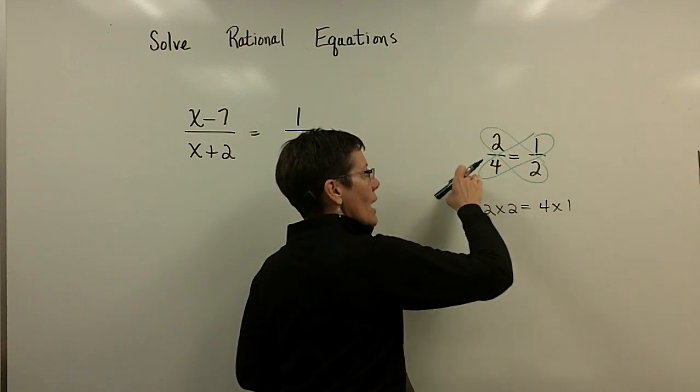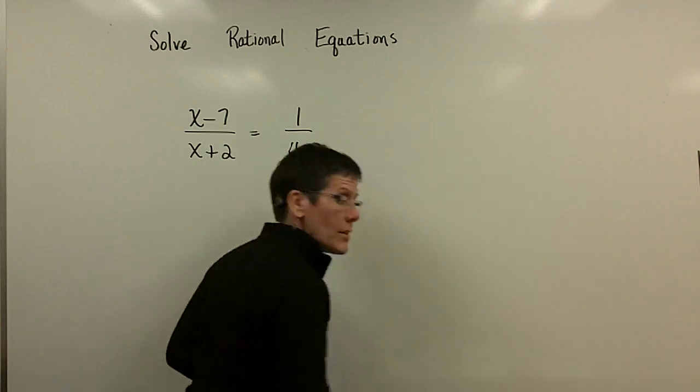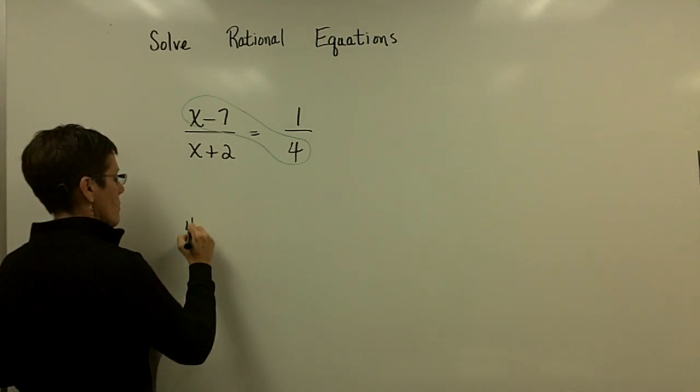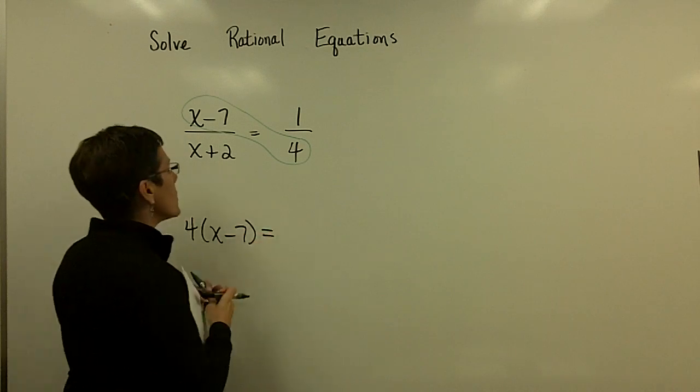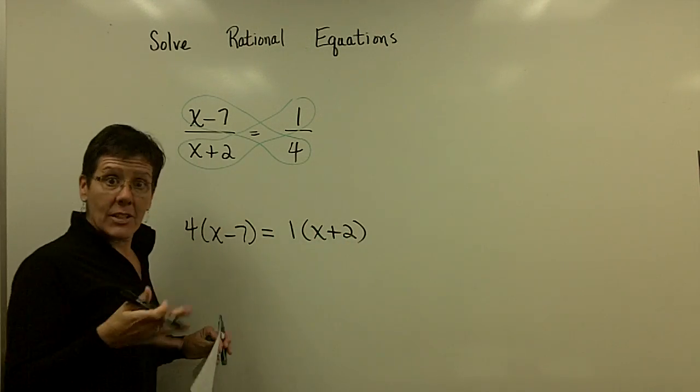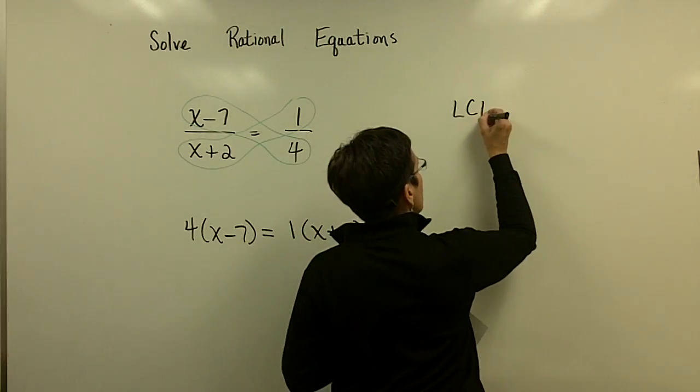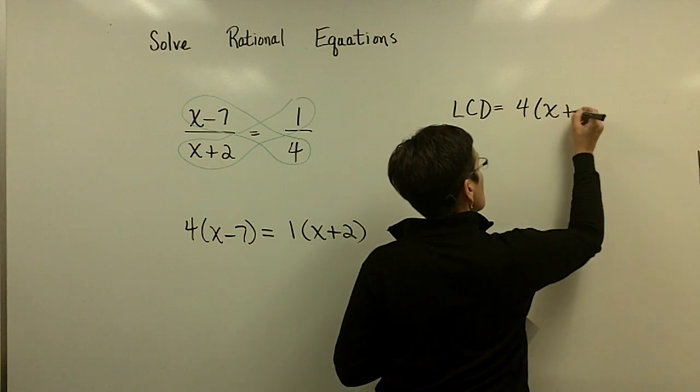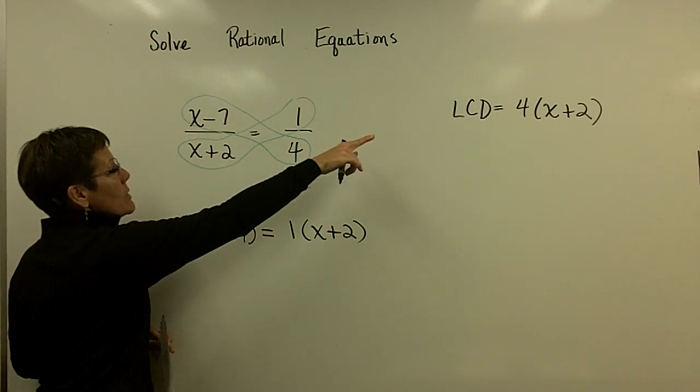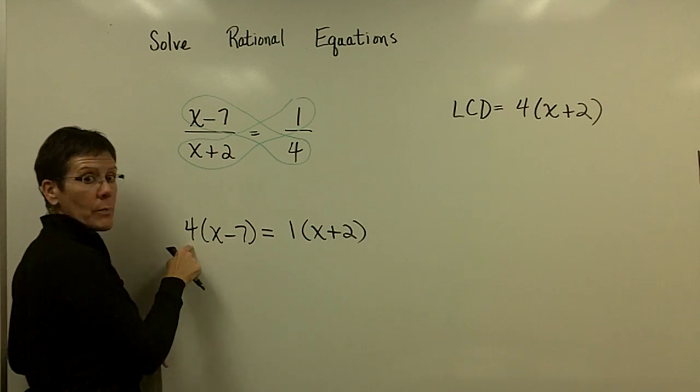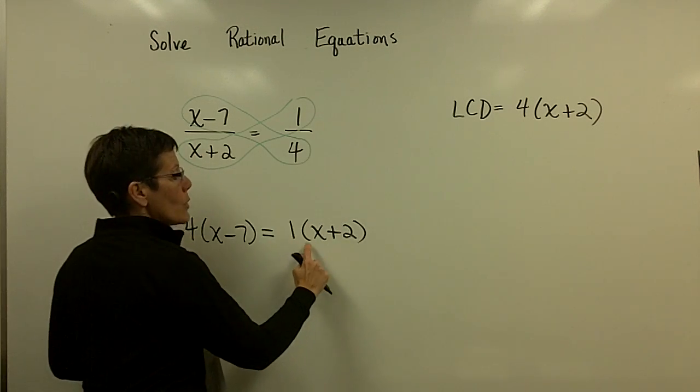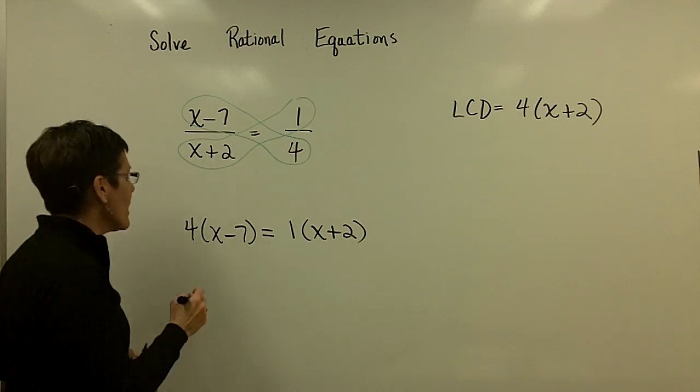2 times 2 has to be equal to 4 times 1. And it is. The problem we've got on the board here is a proportion. So, we could set their cross products equal and eliminate the denominators. So, I could just take this 4 times the (x-7) and set it equal to this 1 times this (x+2). Had you not noticed, the LCD for this problem was 4(x+2). So, this fraction here had the (x+2). It was missing the 4. So, the numerator got multiplied by 4.